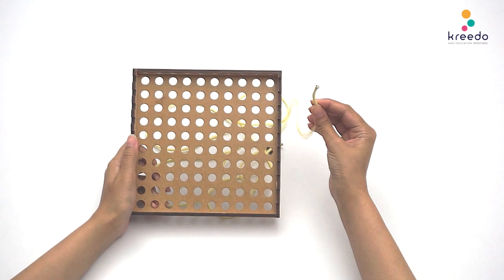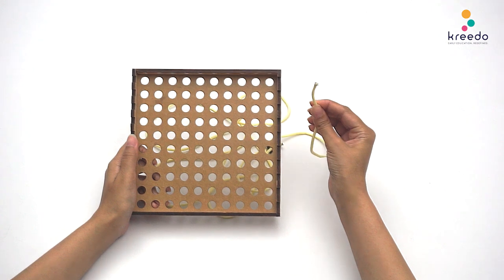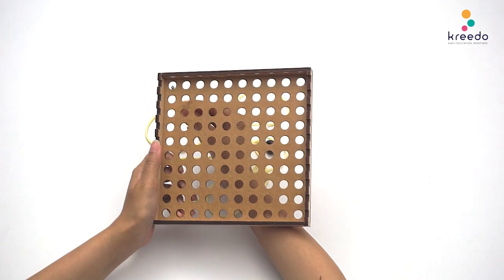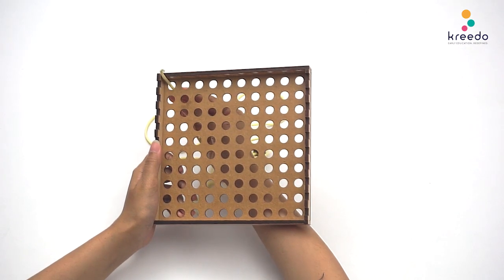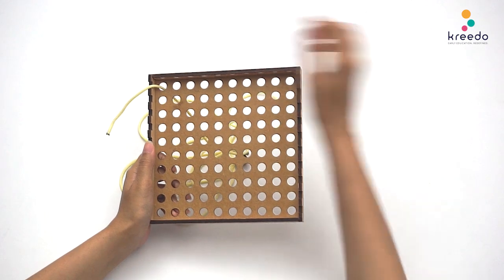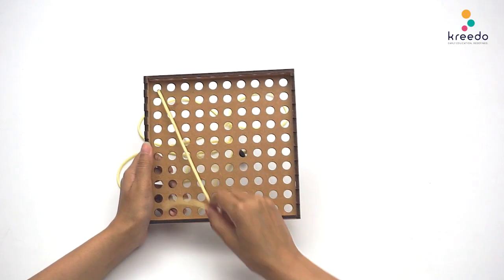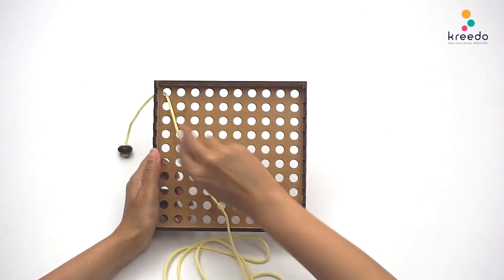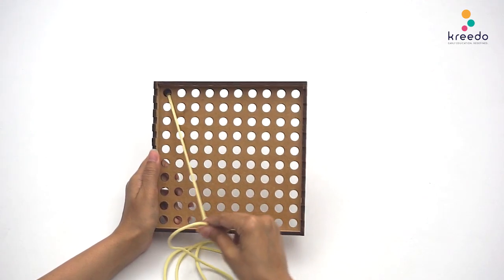Push the loose ends of the thread in and out of the holes in random order. Pull the thread to check in and out of the holes. If they are threaded tightly, continue the pattern.